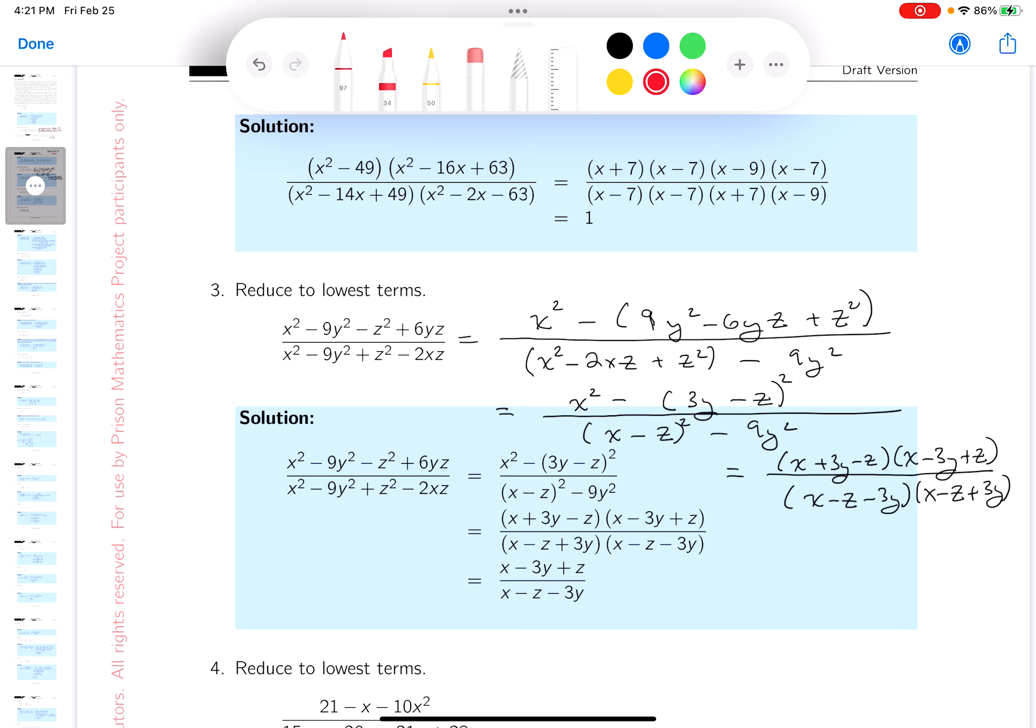And what I notice over here is x plus 3y minus z. Well, if you look at this one, it's also x plus 3y minus z. Now the other ones are not the same. The one on top is x minus 3y. Where they differ is in the z. One says plus z, one says minus z. So I'm done.